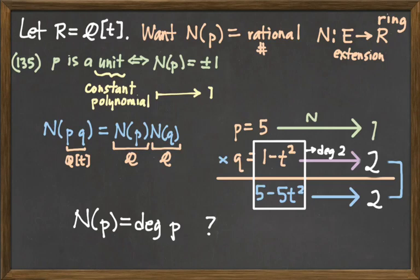If you feel like P was 5T cubed, then that would be 3. And then 3 times 2 would be 6. And you multiply those, you'd get a degree of 5. You'd get a degree of 5. Right, so just leaving the norm as being equal to the degree is not quite what we want.